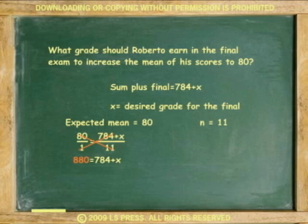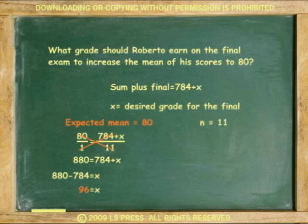Multiply across. Subtract. X equals 96. Roberto must get at least 96 on the final to get a mean of 80.